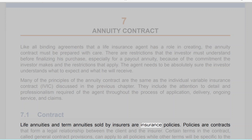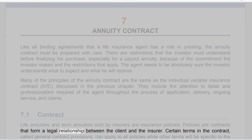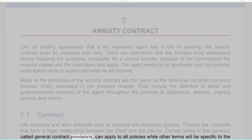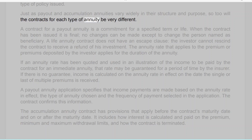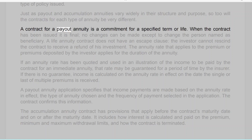Many of the principles of the annuity contract are the same as the individual variable insurance contract (IVIC) discussed in the previous chapter. They include the attention to detail and professionalism required of the agent throughout the process of application, delivery, ongoing service, and claims. Section 7.1: Contract — life annuities and term annuities sold by insurers are insurance policies, which are contracts that form a legal relationship between the client and the insurer.